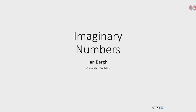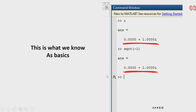So basically, imaginary numbers, complex numbers — I pressed a button I shouldn't have. I don't know what I did. Oh, you guys can't see it, so that's okay. So basically, what we know is that i equals the square root of negative one. That's what he called me on that.